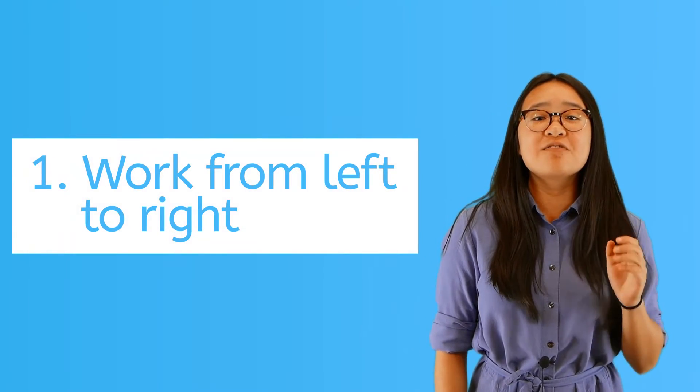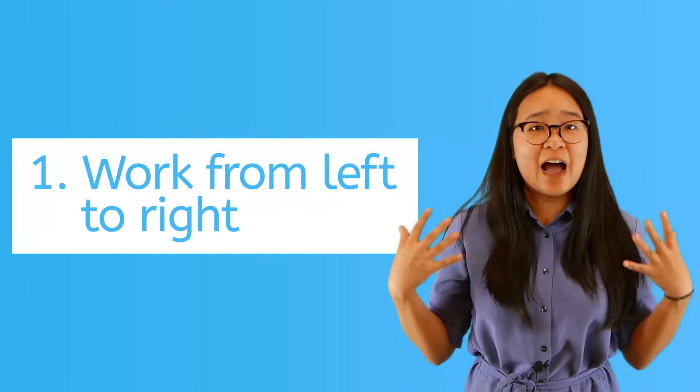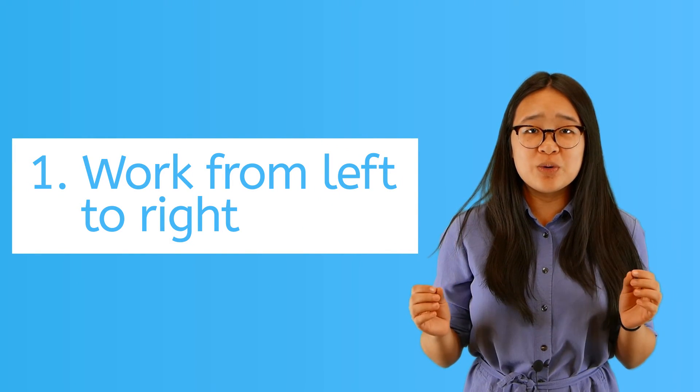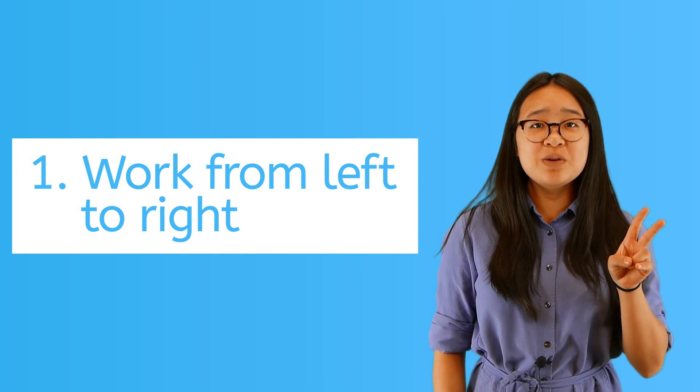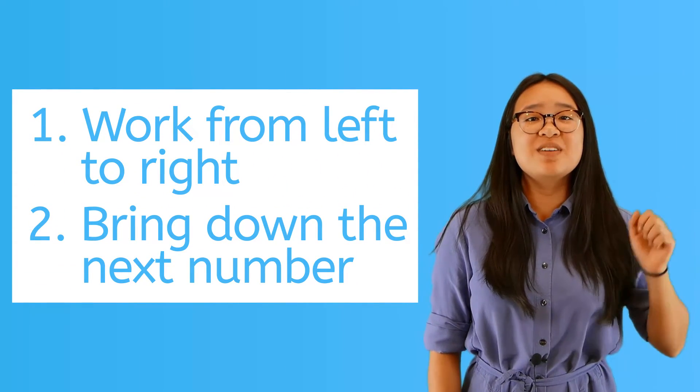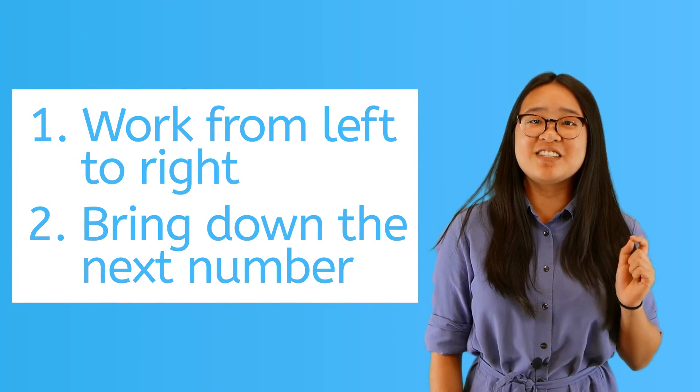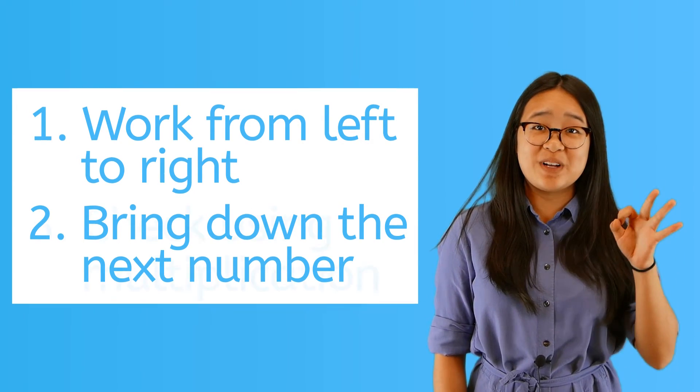To sum it up in a few simple tips: 1. Work from left to right. It doesn't matter how big the dividend is. You're still working with it in small chunks. 2. Remember to bring down the next number. And don't forget that 0 is also a number. 3. Use multiplication to check your work.